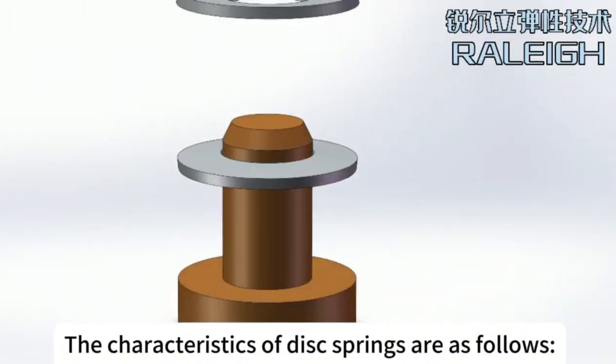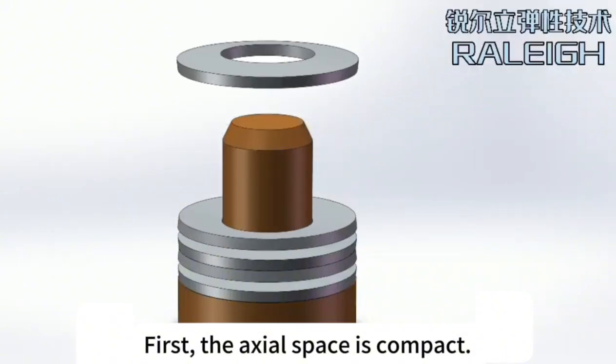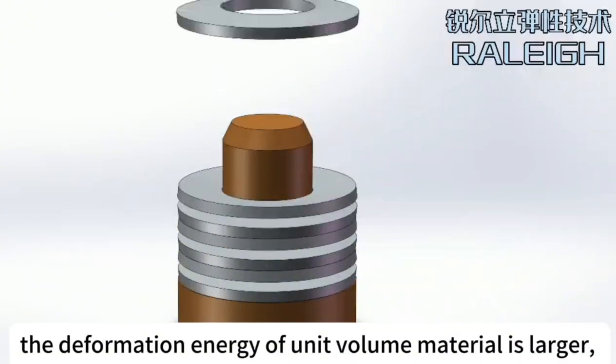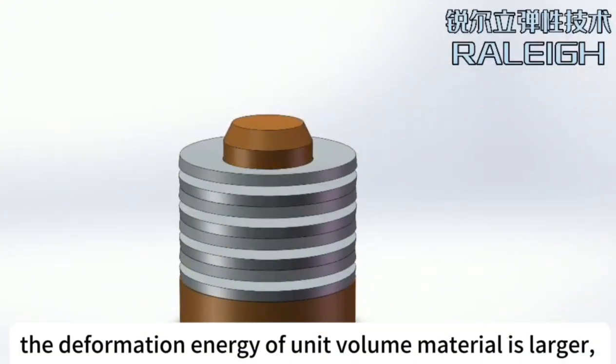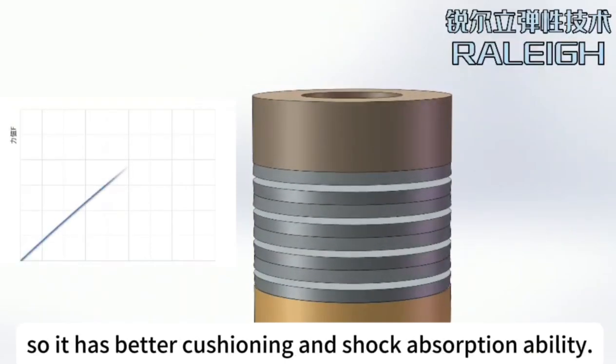The characteristics of disc springs are as follows. First, the axial space is compact. Compared with other springs, the deformation energy of unit volume material is larger, so it has better cushioning and shock absorption ability.